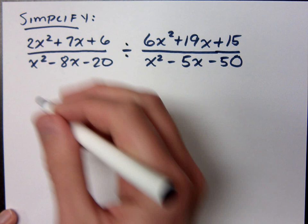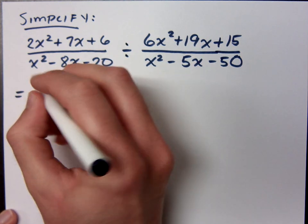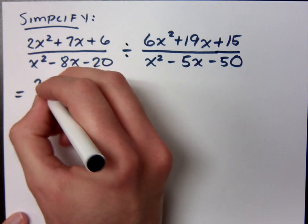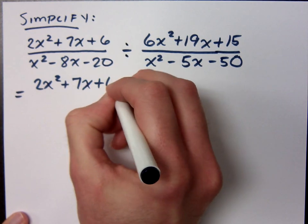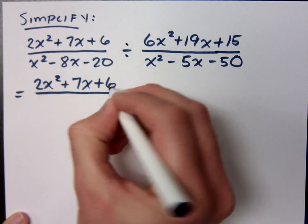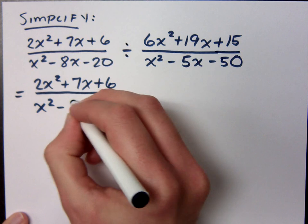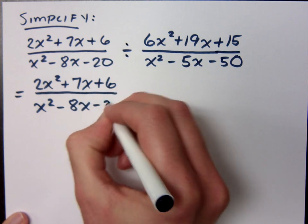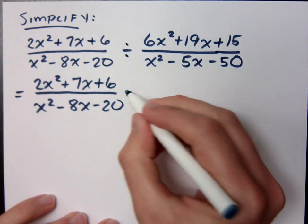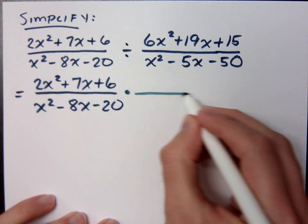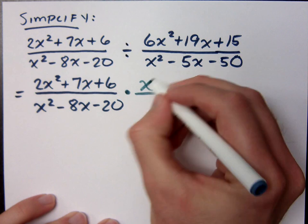Multiply times the reciprocal. Now, we don't necessarily have to do this, but I'm just going to rewrite this. I think some of you will do better if I do that. Some of you could just go ahead and factor while we are changing this to multiplication. It doesn't really matter. So multiply times the reciprocal.